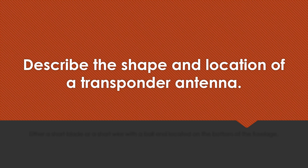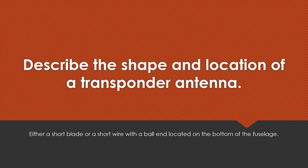Describe the shape and location of a transponder antenna. Either a short blade or a short wire with a ball end, located on the bottom of the fuselage.